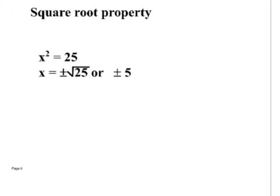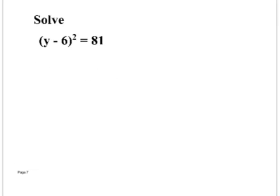Let's talk about the square root property. If x² = 25, then x could be the positive or negative square root of 25, because 5 times 5 is 25 and negative 5 times negative 5 is also 25. So the square root of 25 is positive 5 or negative 5. Now solve (y - 6)² = 81. We want to eliminate the exponent of 2, so square root both sides.